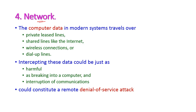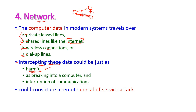The fourth level is the network level. Computers are connected to each other over a network, and data travels over private lines, shared lines like the internet, wireless connections, or dial-up lines. Intercepting data could be just as harmful as breaking into the computer, and interruption of communication could constitute a remote denial of service attack, also called a distributed denial of service (DDoS) attack.